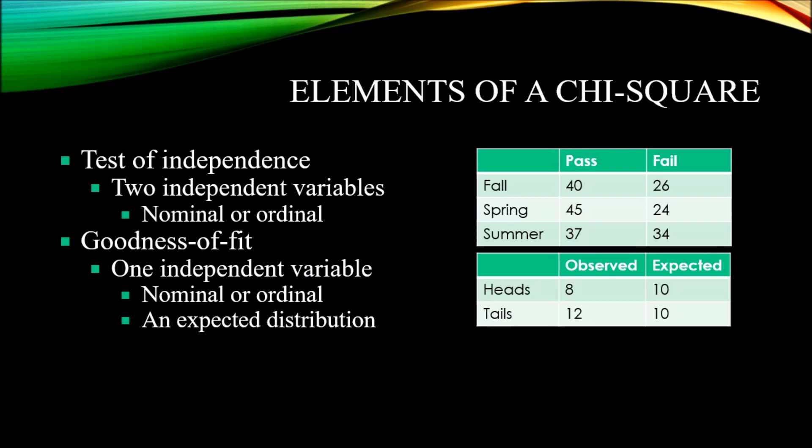However, here we only have the frequencies. We have the number of students that passed in the fall, the number that failed in the fall, and the same information for spring and summer. So when working with data that have violated the assumptions of parametric statistics, that might be a time to use chi-square, as I mentioned before, or when you have frequencies or counts. That's also an opportunity to use chi-square.